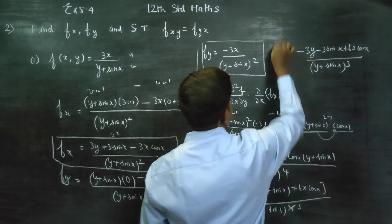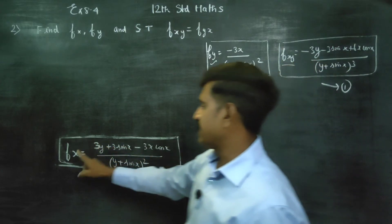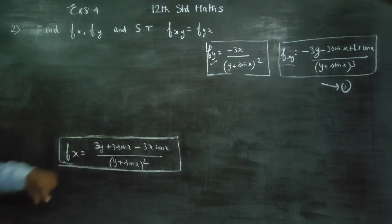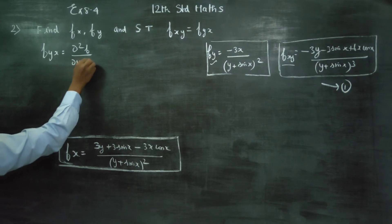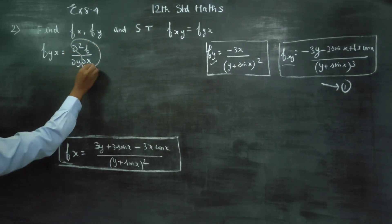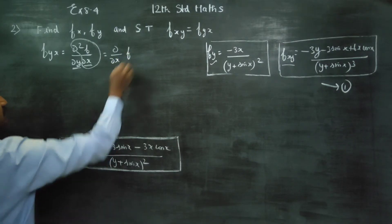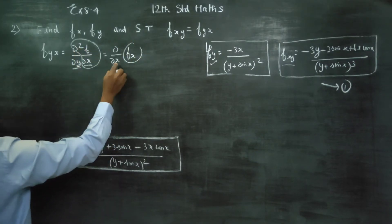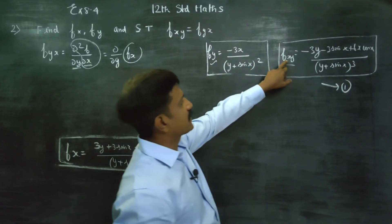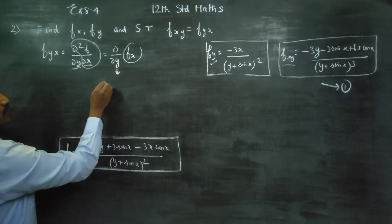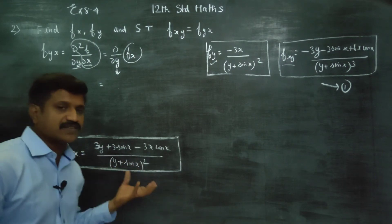This is fxy — result number 1. Now, with fx we have to compute fyx. The meaning of fyx is dou squared f by dou y dou x — you have to differentiate fx with respect to y. We already obtained fx; now differentiate it partially with respect to y.